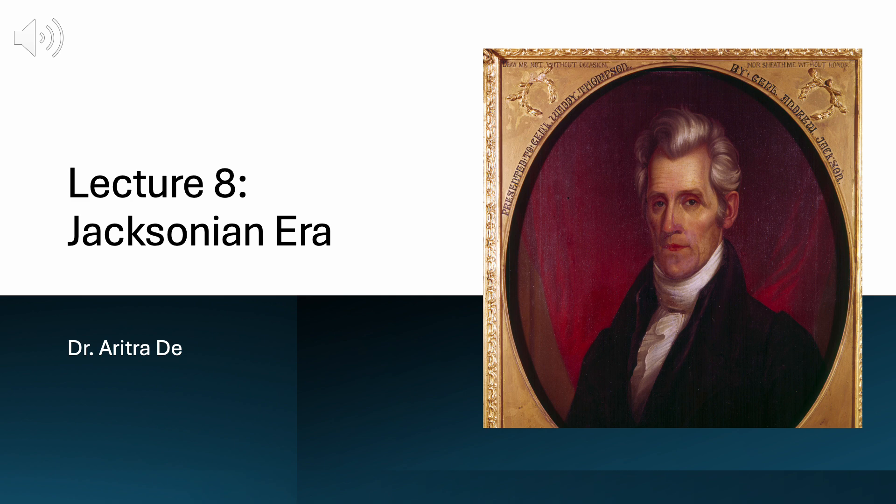In this lecture, we will explore the major political, economic, and social shifts of the time, focusing on key events and figures that helped define this era, and we will examine their lasting impact on the development of the United States. But before we move on to discuss the Jacksonian era, we need to briefly discuss a few important events that happened immediately prior to it. We will start with the Missouri Compromise and briefly talk about the Monroe Doctrine.